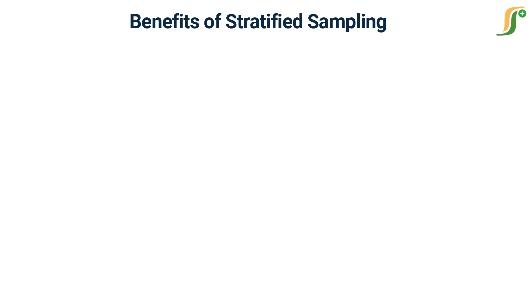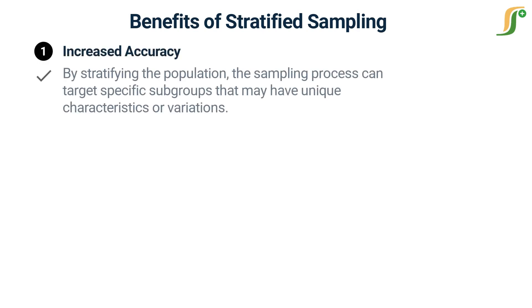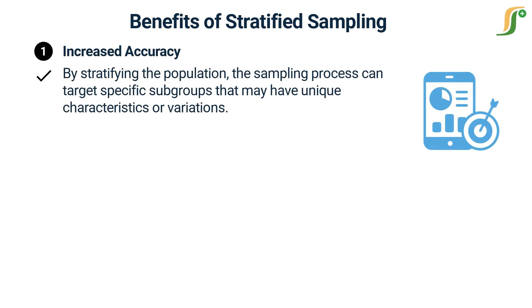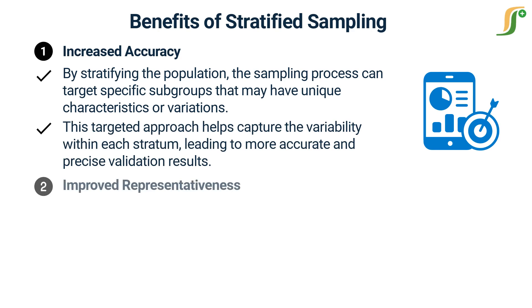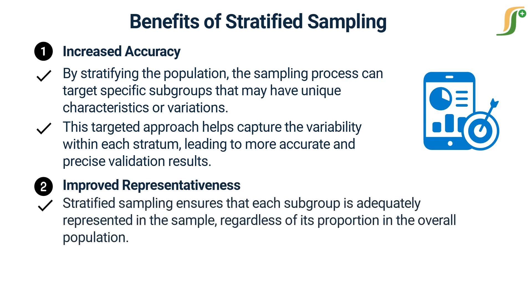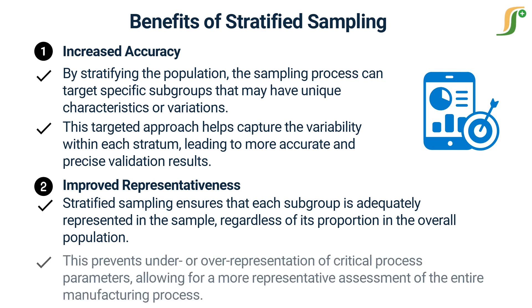There are several benefits of stratified sampling in process validation. The top three benefits are discussed here. First, increased accuracy: by stratifying the population, the sampling process can target specific subgroups that may have unique characteristics or variations. This targeted approach helps capture the variability within each stratum, leading to more accurate and precise validation results. Second, improved representativeness: stratified sampling ensures that each subgroup is adequately represented in the sample, regardless of its proportion in the overall population. This prevents under- or over-representation of critical process parameters, allowing for a more representative assessment of the entire manufacturing process.